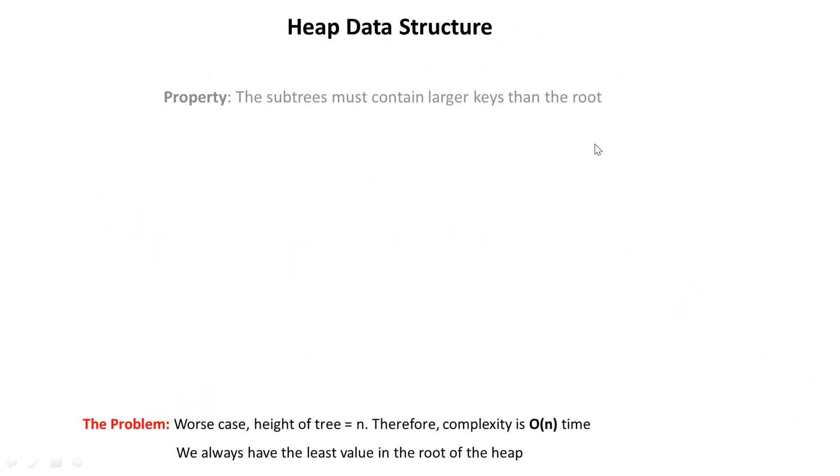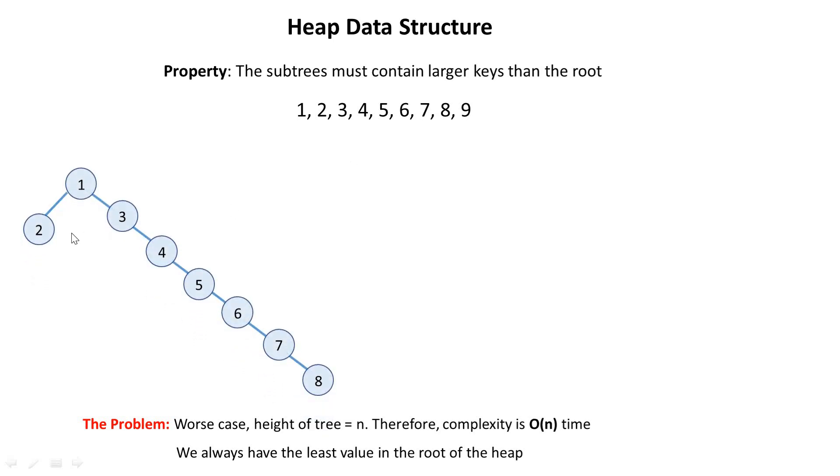Now the heap data structure have something similar. In this case, the subtrees must contain larger keys. So in the heap data structure, whether it's right or left side, a right or left node does not matter. So if we have something like this, we have 1, every other thing below 1 should be greater than 1. We have 3 here, everything below 3 should be greater than 3 and so on and so forth. So this is also a heap and also this is a heap.